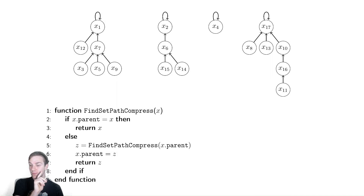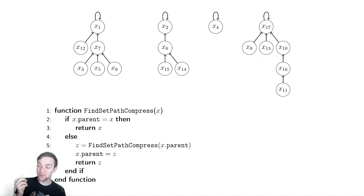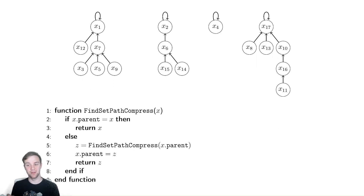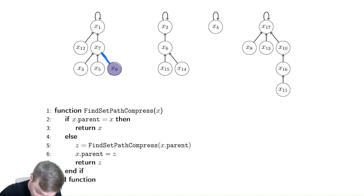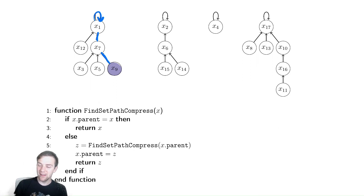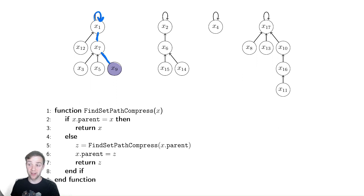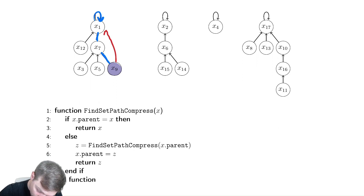Now let's get really clever. We have been kind of stupid in our implementation — we were finding information and then not using it. We're going to do a find set that uses path compression. So let's imagine I wanted to find the set that x9 was in. In order to do that I would have to go up and up and eventually realize I'm pointing at myself. But after doing that, I know for a fact x9 is in the same set as x1. So why not make x9 point directly up at x1?